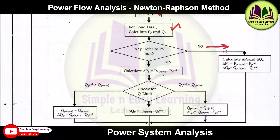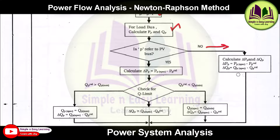The mismatch is computed using: delta_Pp = Pp_specified - Pp_calculated, where Pp_calculated was obtained in the previous step. Substituting gives delta_Pp and delta_Qp for the load bus.